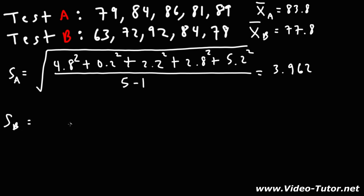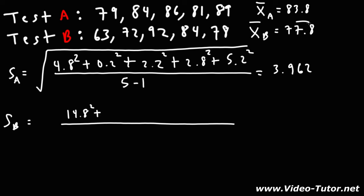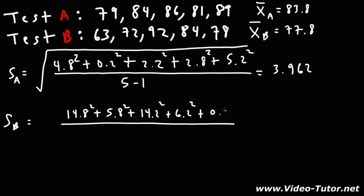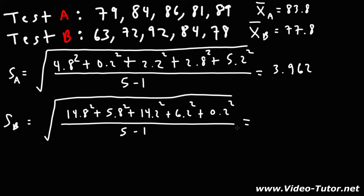Now for test B, the differences from the mean of 77.8 are: 77.8 minus 63 is 14.8; 77.8 minus 72 is 5.8; 92 minus 77.8 is 14.2; 84 minus 77.8 is 6.2; and 78 minus 77.8 is 0.2. Everything else in the formula is the same — divide the sum of squares by n minus 1 and take the square root. Go ahead and plug that into your calculator.